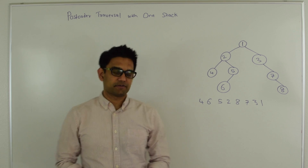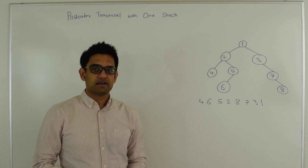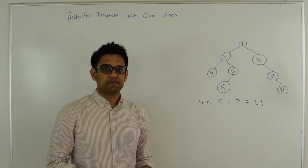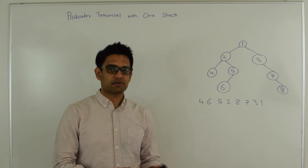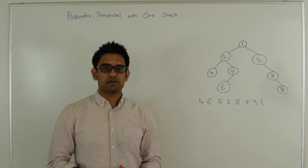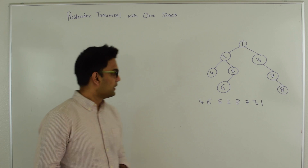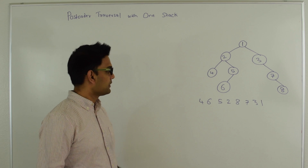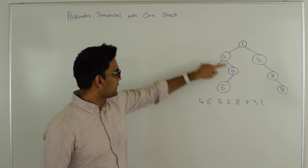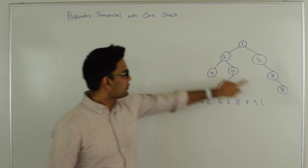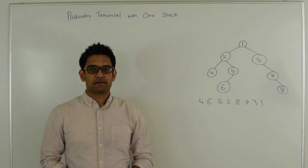So what is a post-order traversal? If you have a binary tree, in post-order traversal we traverse everything on the left side, then we traverse everything on the right side, and then we visit the root. This is recursively true for every node. For this binary tree, the post-order traversal is 4, 6, 5, 2, 8, 7, 3, and finally 1.